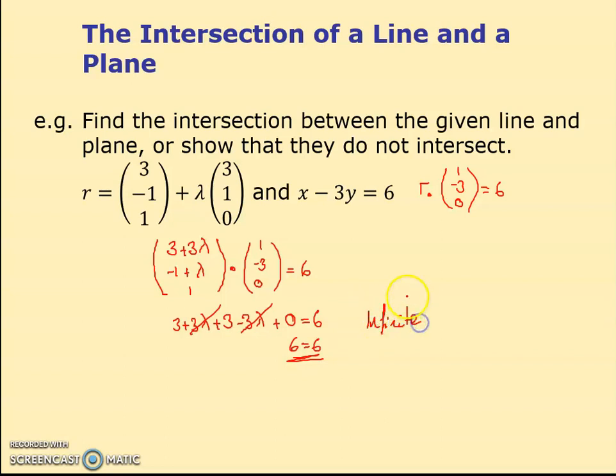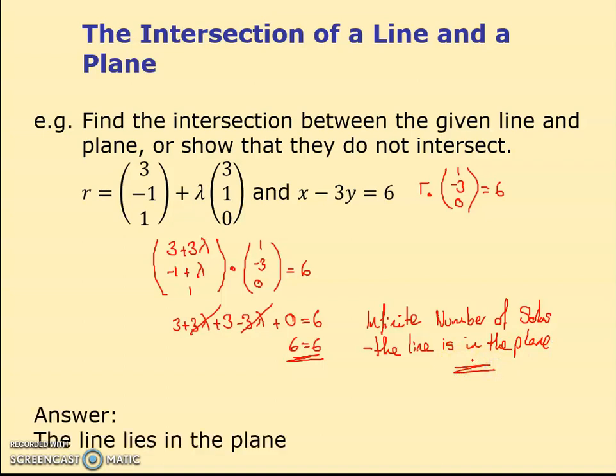So first time we had one solution. Then we had no solutions. I think we've got an infinite number of solutions. And the reason I think that is because I think the line is in the plane itself. The line is in the plane. What have I got here? The line lies in the plane. And that, basically, 6 is always equal to 6. So this is always in the plane.